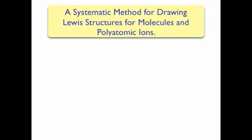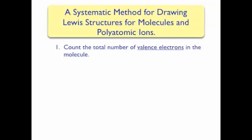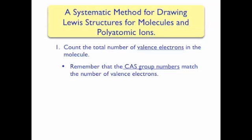The first step is common among all methods used to draw Lewis structures: we need to know the total number of valence electrons in the molecule. This is important because a Lewis structure has to represent all of the valence electrons for all of the atoms in the molecule. For main group elements, the number of valence electrons matches the CAS group numbers — the Roman numerals followed by A's for the main group elements in the periodic table. For example, all elements in group 6A have 6 valence electrons.